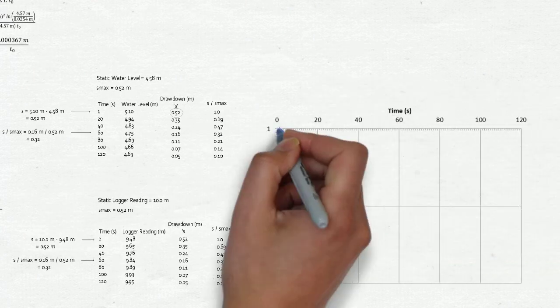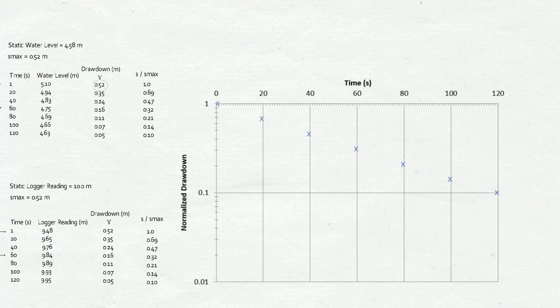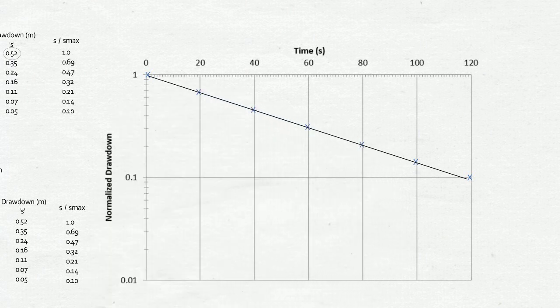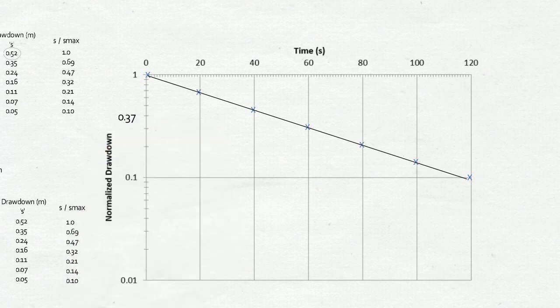Plot S over S max on the y-axis using a semi-log scale against time on the x-axis. Draw a line of best fit through your data, and the line will slope downwards. Locate the point 0.37 on the y-axis. This is the point where drawdown was equal to 37% of the total drawdown during the test.